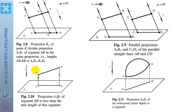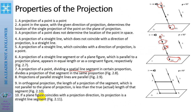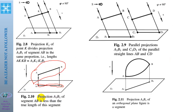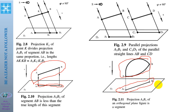In this figure, the given line and its projection show that the length of the projected line is less than the length of the real line. If a plane figure coincides with the projection direction, its projection is a straight line segment. In this figure, a flat object A, B is perpendicular to the plane of projections, and its projection is a straight line.